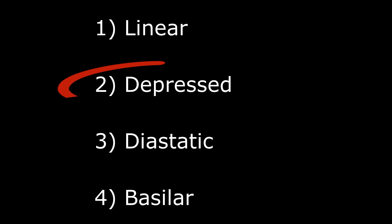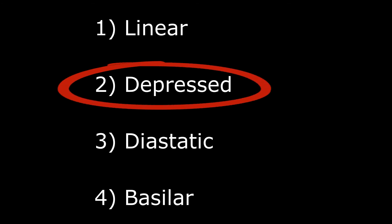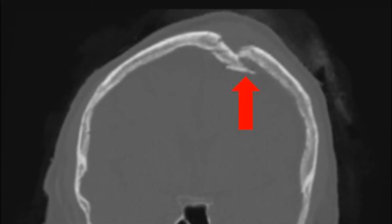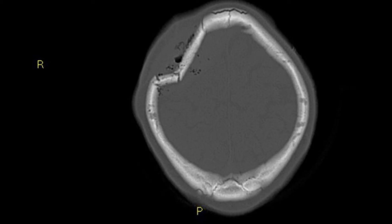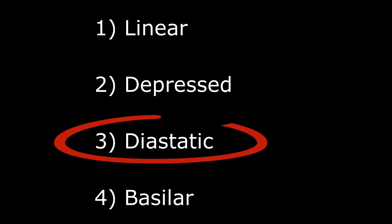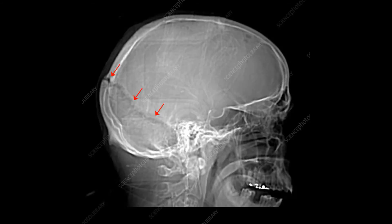Then you have depressed fracture, where a part of the skull is depressed or sunken. Impression fracture is similar to depressed but more severe, and both require surgery. Then you have diastatic fracture, which is along the suture lines and mostly occurs in infants — for example, here you can see a fracture along the lambdoid suture.